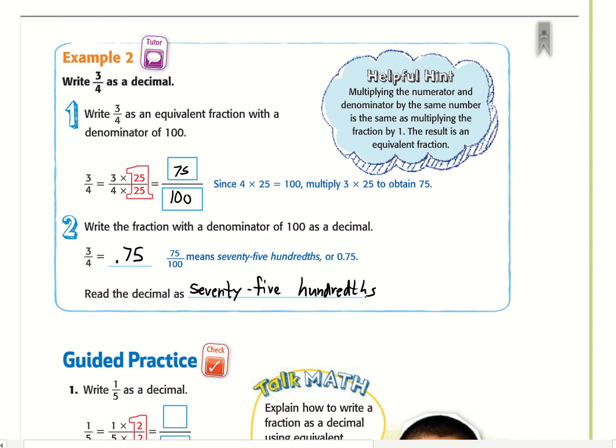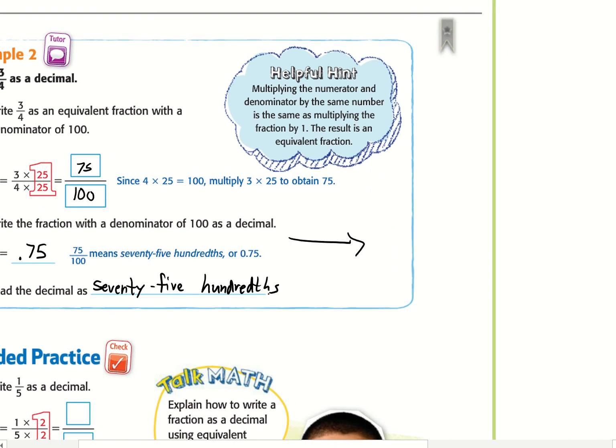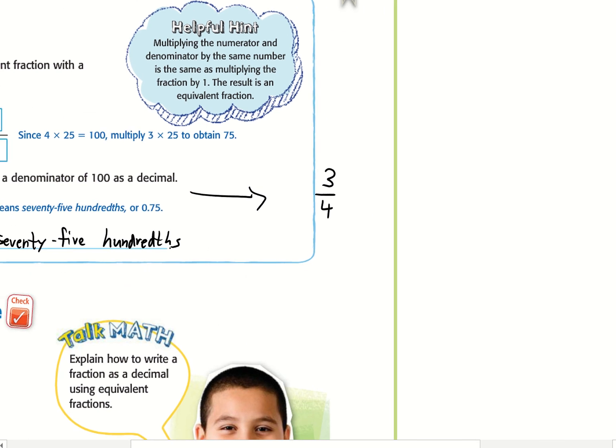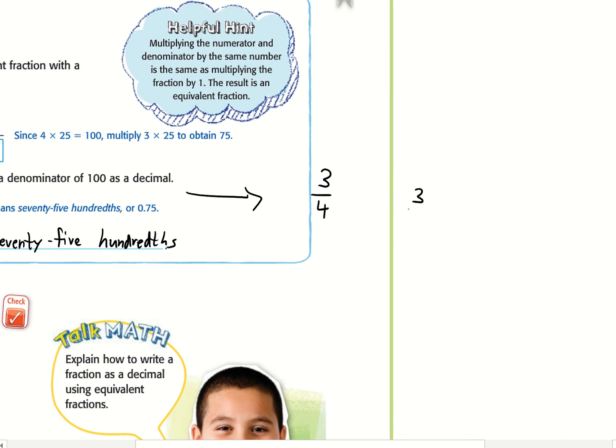I'm going to show you a more advanced method as well. 3/4 is the same as 3 divided by 4. It's the same as dividing decimals. 4 goes into 3 zero times. Normally we would do the remainder, but we can move on.